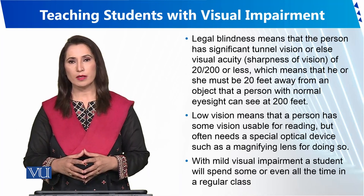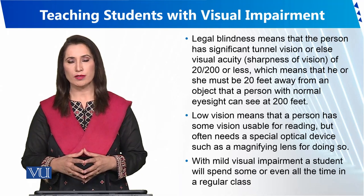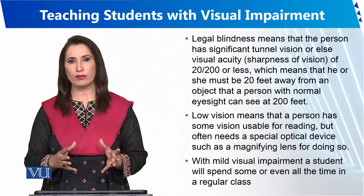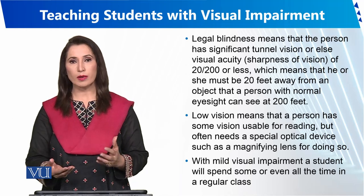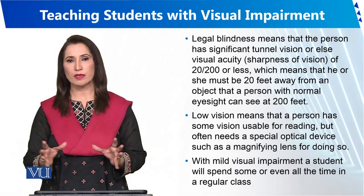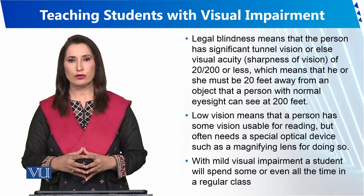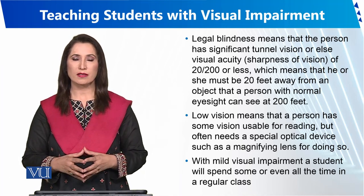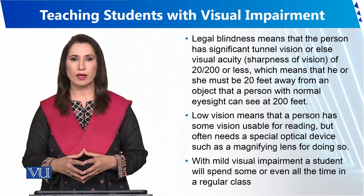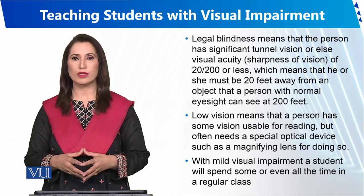Complete blindness means a person is not able to see any object. Different strategies are required for these students. A child with complete blindness cannot read in a regular class and needs support at a different level.